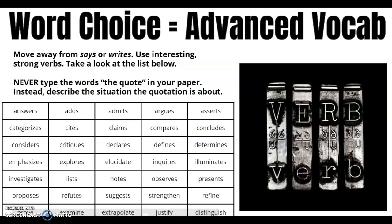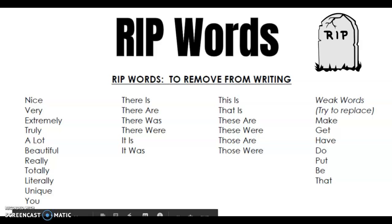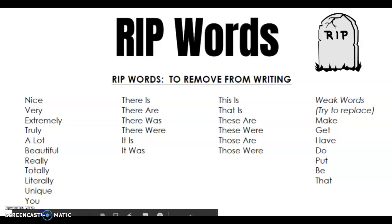Here's some advanced vocabulary. So instead of always saying 'Macbeth said,' you can say Macbeth claims, compares, defines, observes, justifies. You have access to this PowerPoint anytime, so make sure you check it out. Also, get rid of RIP words: this is, that is, these are, it was, really, totally, literally. I'm going to add 'gonna' to this list because people are using that word — it's not even a word. Try to avoid these. Pull this list out when you're done and see if you can go in and change some things up.